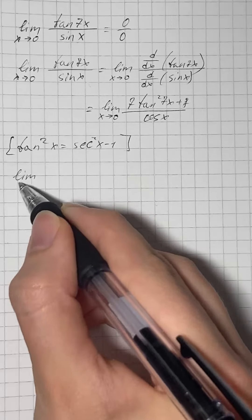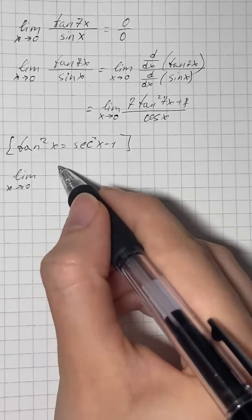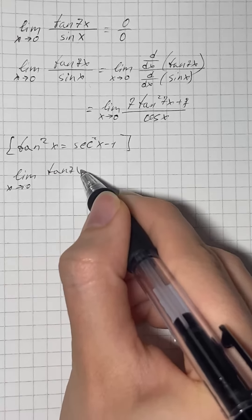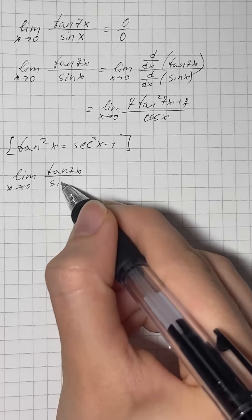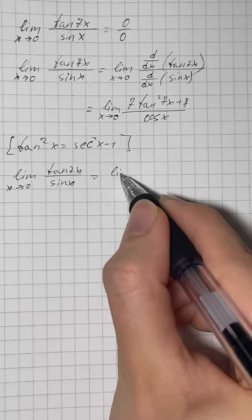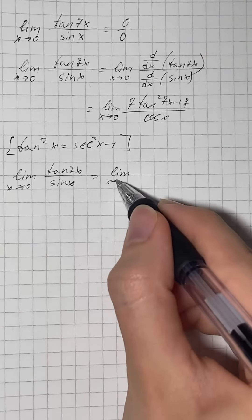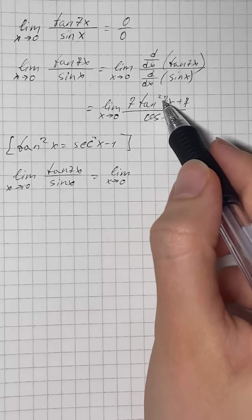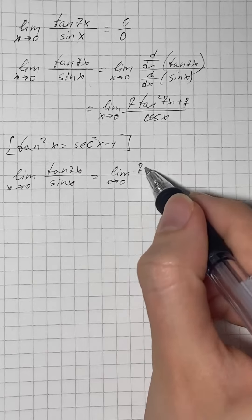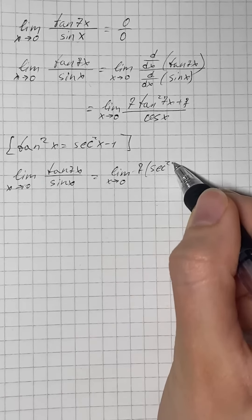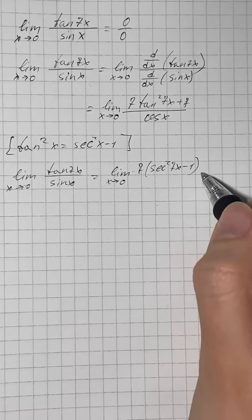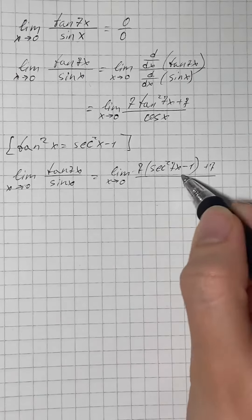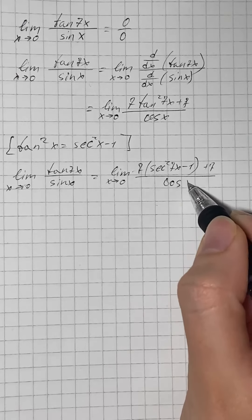Therefore, our limit equals limit as x approaches 0 of, and we substitute tangent squared of 7x with secant squared of 7x minus 1 plus 7 over cos of x.